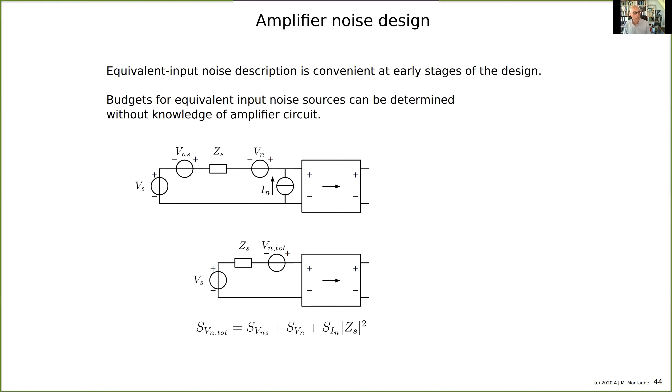I want to have my signal-to-noise ratio expressed in voltage. This current source IN is quite inconvenient, so I want to convert it into voltage and see how much it adds. This can be done using Thevenin and Norton equivalent circuits—the current flowing through ZS builds up a voltage IN times ZS.